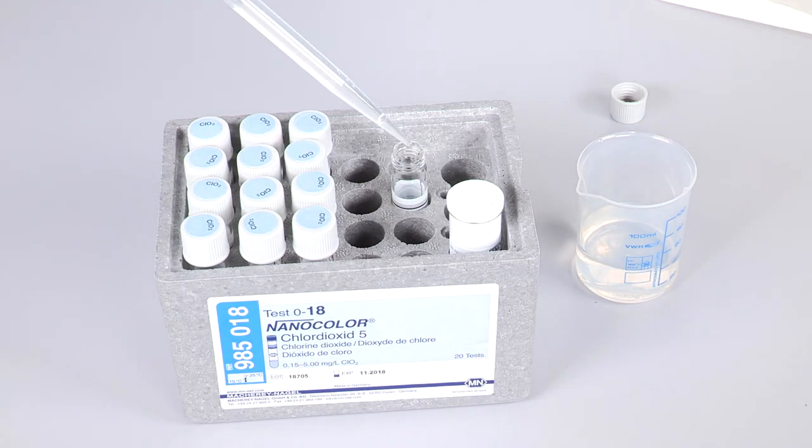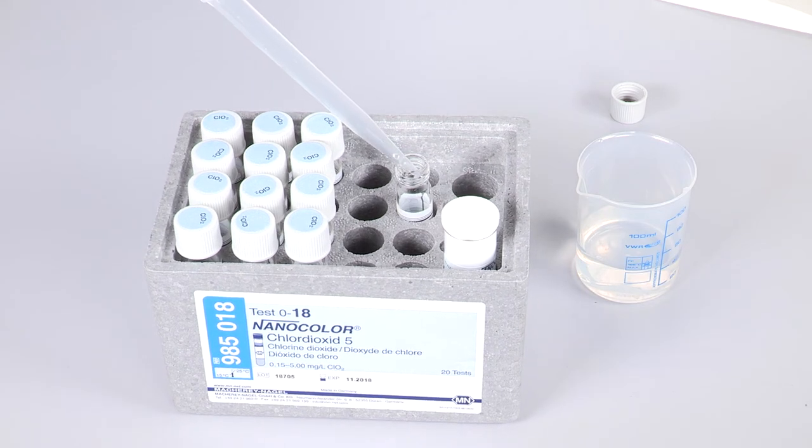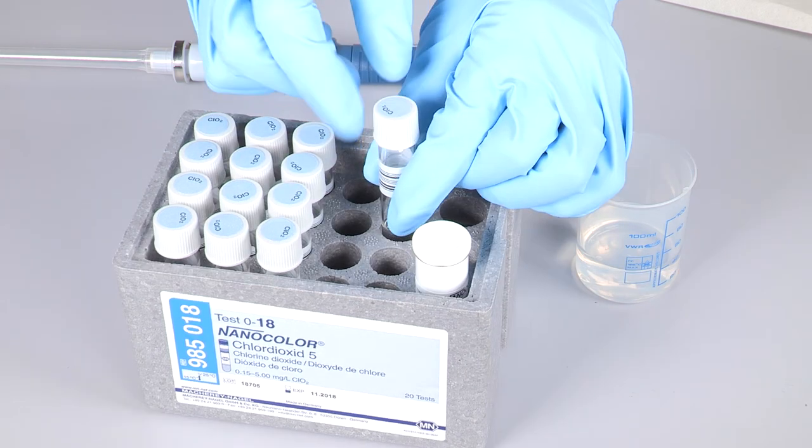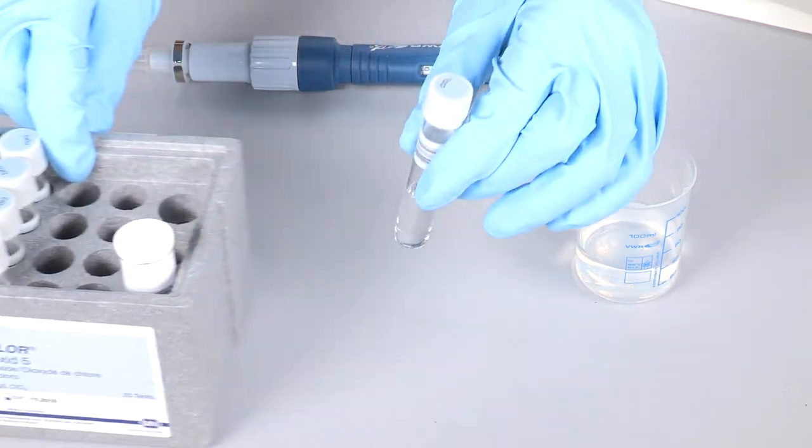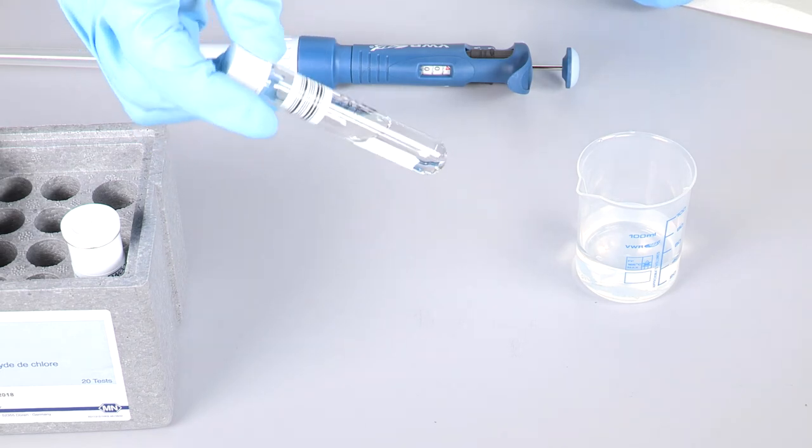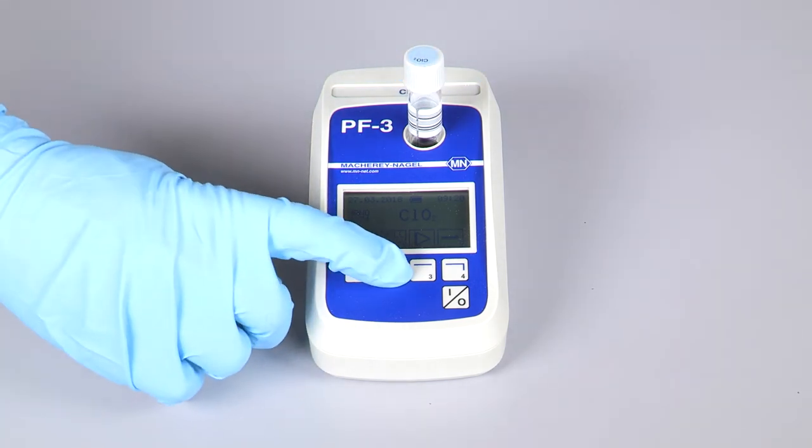First we start with a zero measurement at the photometer. For that we fill 4 ml of sample with a pipette into the cuvette and mix it. The cuvette is inserted into the photometer to perform the zero adjustment.